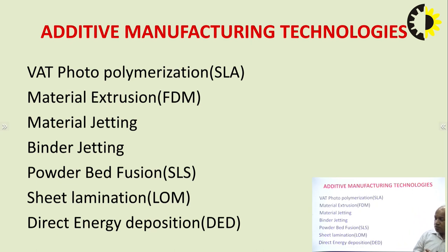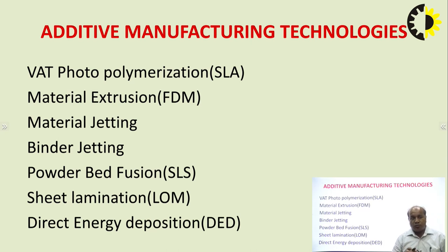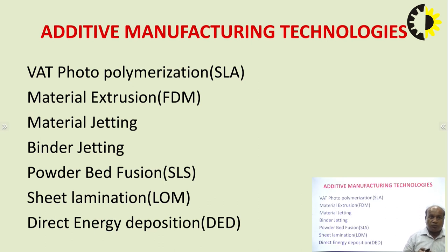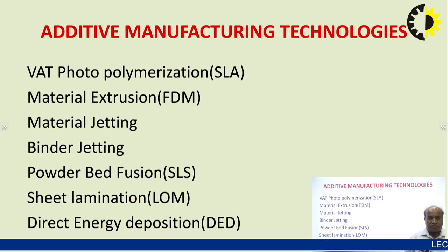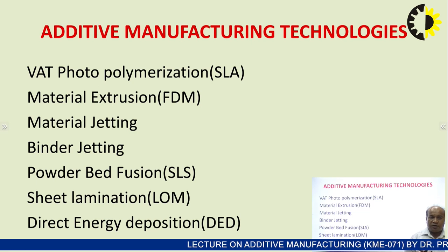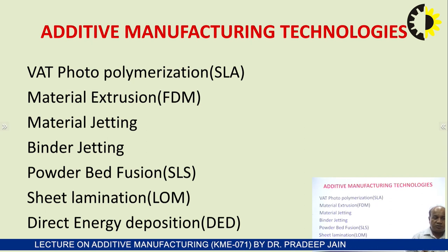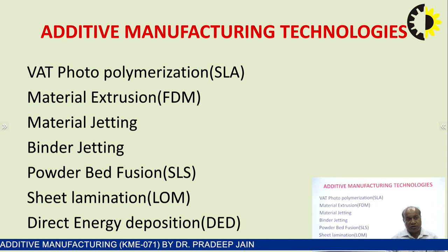There are different types of technology available for additive manufacturing. Seven prominent technologies are now widely available in the market: vat photopolymerization (SLA), material extrusion (FDM), material jetting, binder jetting, powder bed fusion (SLS), sheet lamination — known as Laminated Object Manufacturing — and Direct Energy Deposition (DED).